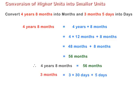Here, 3 months are equal to 3 multiplied by 30 days, or 90 days. So 90 days plus 5 days are equal to 95 days. Therefore, 3 months 5 days are equal to 95 days.